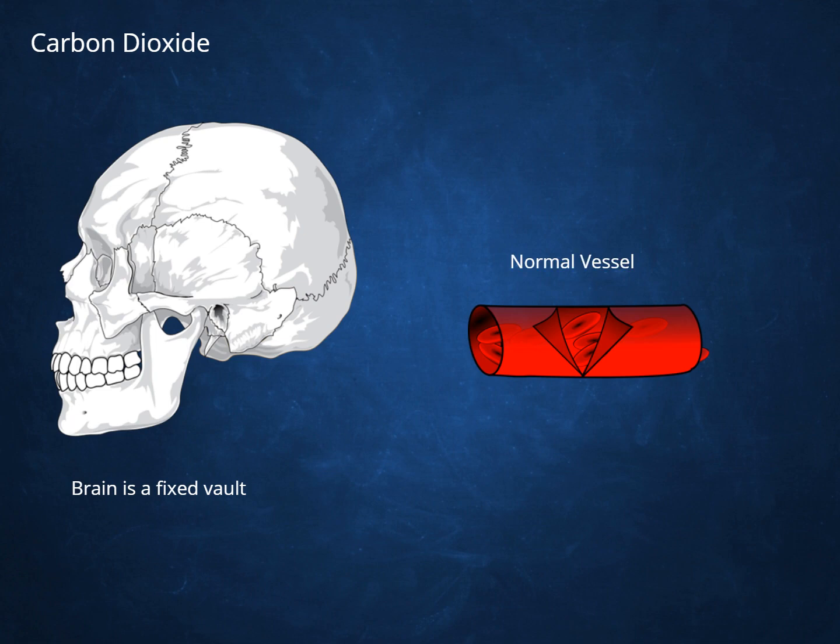When hyperventilation occurs, blood vessels constrict. You're decreasing the CO2, that partial pressure of CO2 within the body. This is great for a short period because it buys time to intervention. Because the vessels shrink, the brain doesn't occupy as much space.